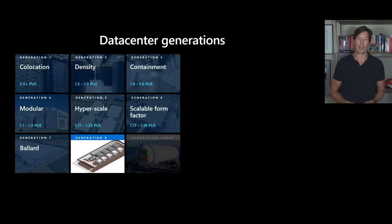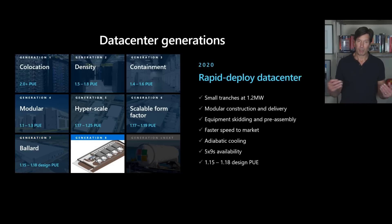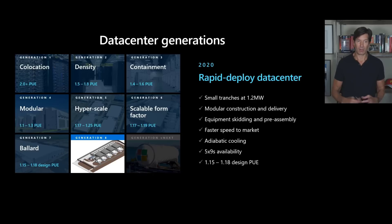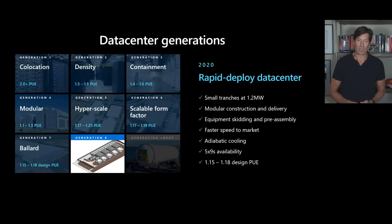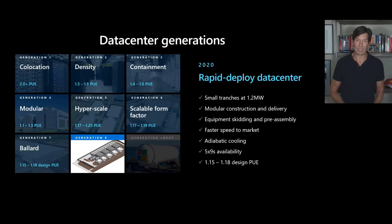We've taken the Ballard design further with a rapid deployment version using modular pre-construction, which can be set up very quickly at smaller footprints than the full Ballard minimum. This allows us to deploy new regions extremely rapidly, as a trade-off of slightly higher initial cost for speed of deployment. Once we initially land, as demand grows we can build full Ballard data centers on site to continue expanding. Based on the Ballard design, these achieve PUEs of 1.15 to 1.18, and you can see how successive generations have driven our PUE down over time.